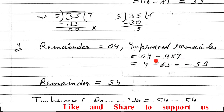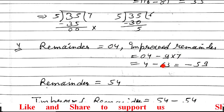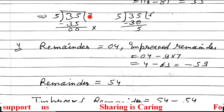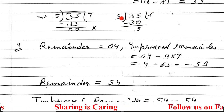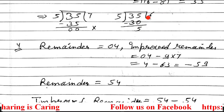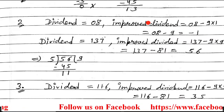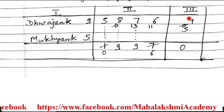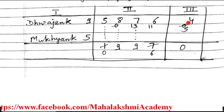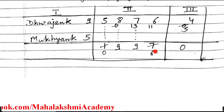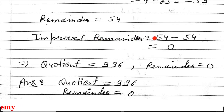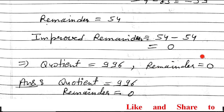Take 6 here. Then 5×6=30, remainder 5. Re-enter in table: instead of 7, take 6, and instead of 0, take 5. So the remainder is 54. To find the improved remainder: 54 minus 9×6 = 54 minus 54 = 0. So quotient is 996 and remainder is 0.